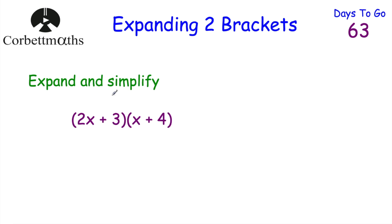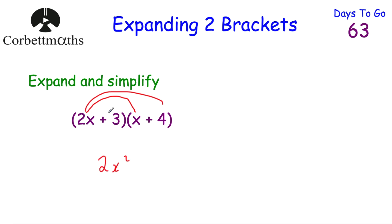Next we've been asked to expand and simplify (2x + 3)(x + 4). We'll multiply both terms by 2x, then both terms by 3, and add them up. So 2x times x is 2x squared, 2x times 4 is plus 8x. Then 3 times x is plus 3x, and 3 times 4 is 12, so plus 12.